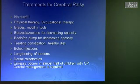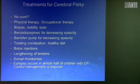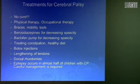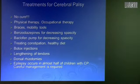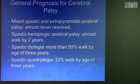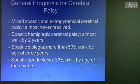Treatment for cerebral palsy — there is no cure. Physical therapy and occupational therapy are very important. Braces and mobility tools are extremely important. Benzodiazepines for decreasing spasticity, baclofen pump, treat constipation, healthy diet, Botox injection when fewer than four large muscle groups are involved, lengthening of tendons close to puberty, dorsal rhizotomies when helpful, and carefully treating epilepsy. Prognosis: mixed spastic and extrapyramidal CP almost never resolves. Spastic hemiplegia — almost walk by two years. Spastic diplegia — more than 50% walk by age three. Spastic quadriplegia — 33% walk by age three.